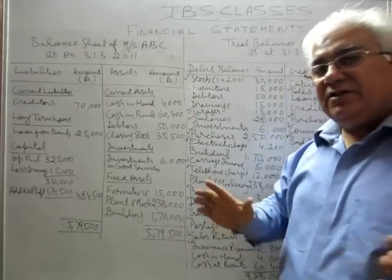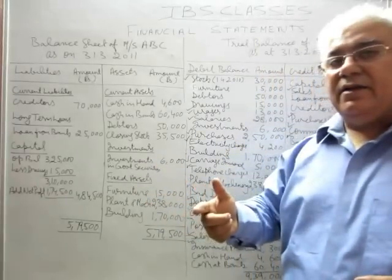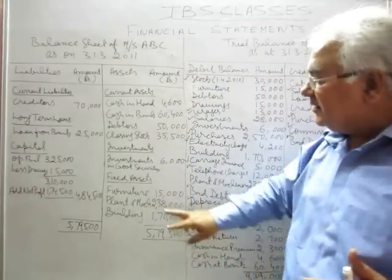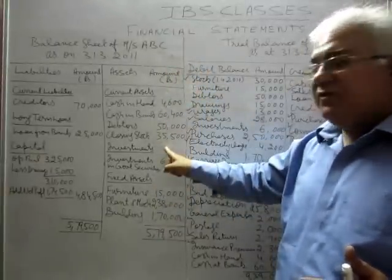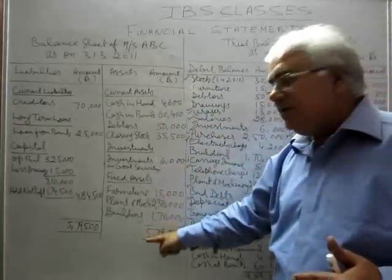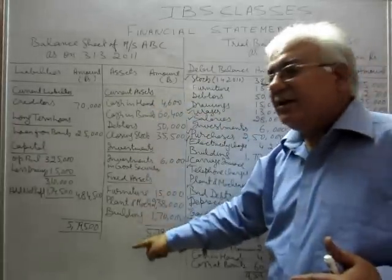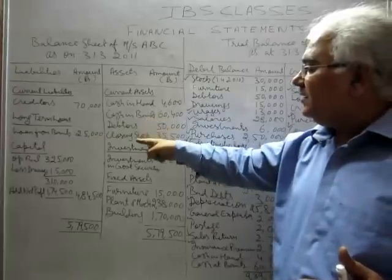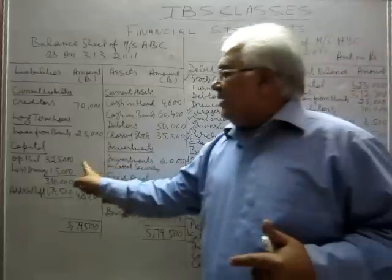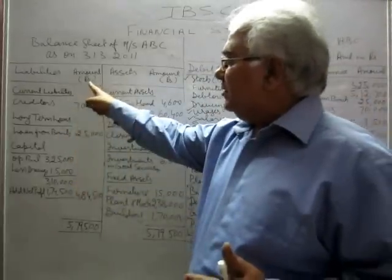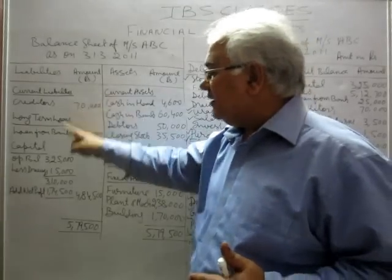The totals of the two sides are equal, confirming the balance sheet is correct. If you follow the permanence order for preparing the balance sheet, the order reverses: fixed assets come on top, investments in the middle, current assets at the end — with cash in hand as the last item. On the liability side, capital is at the top, long-term loans in the middle, and current liabilities at the end.